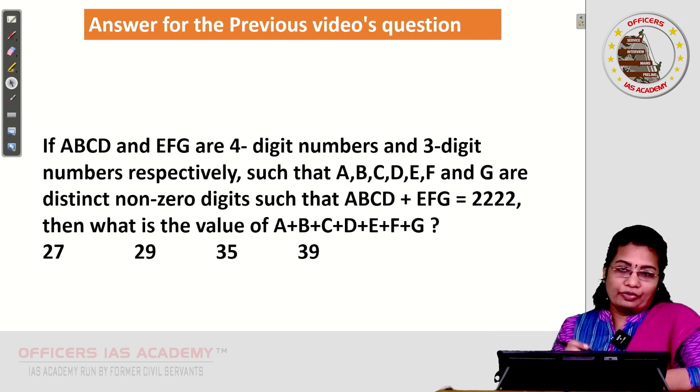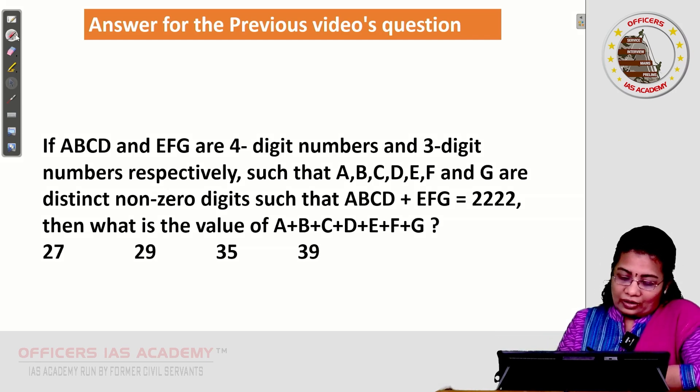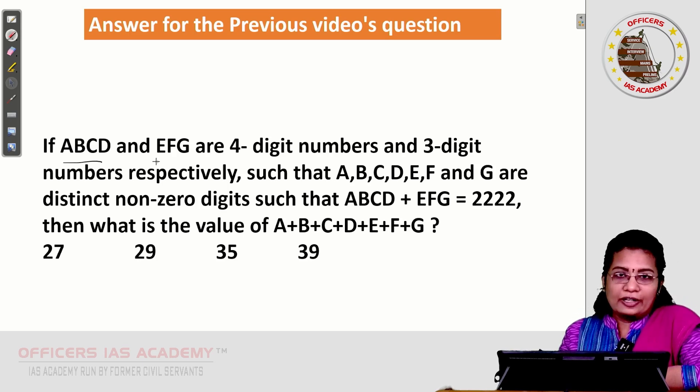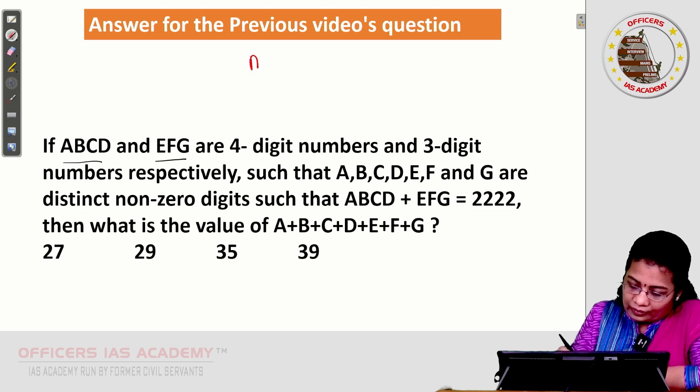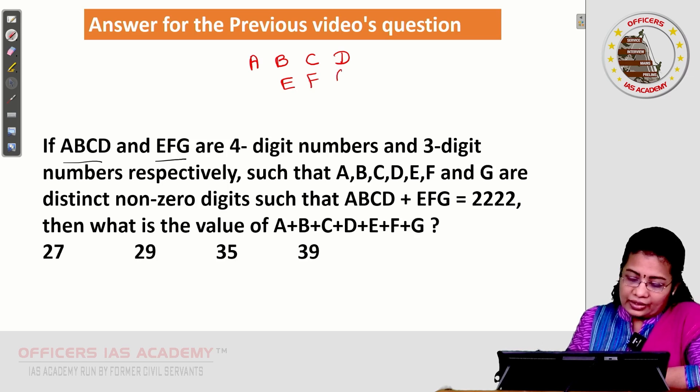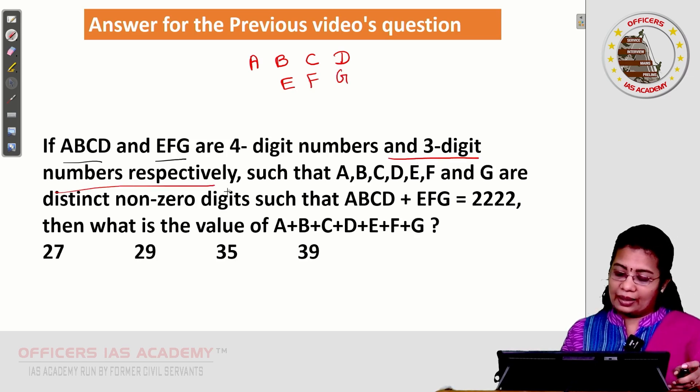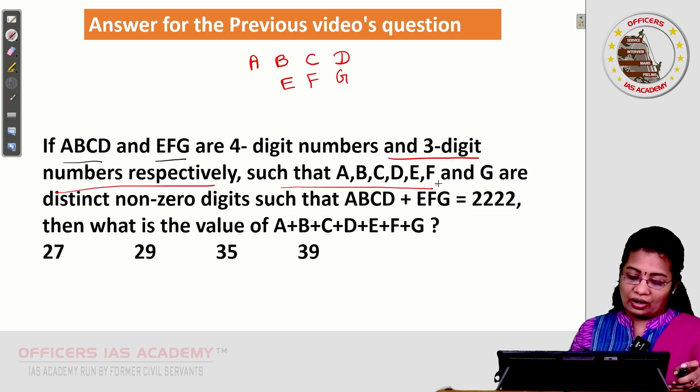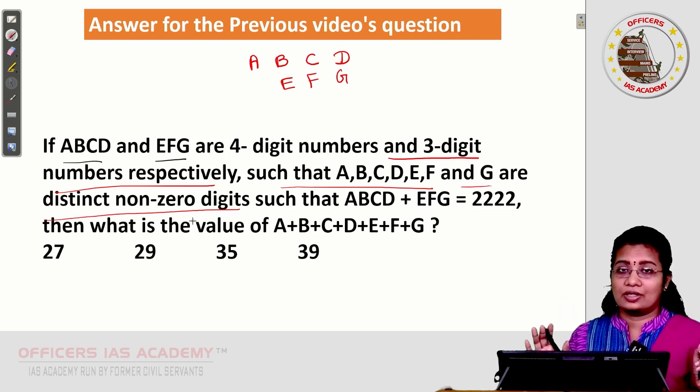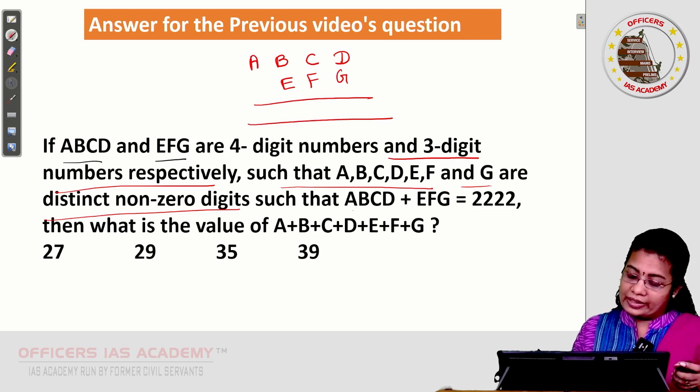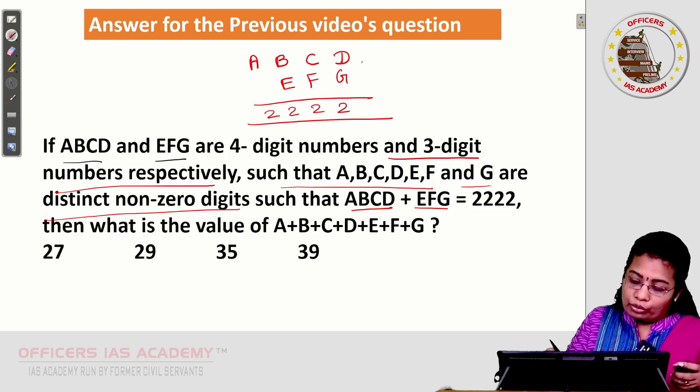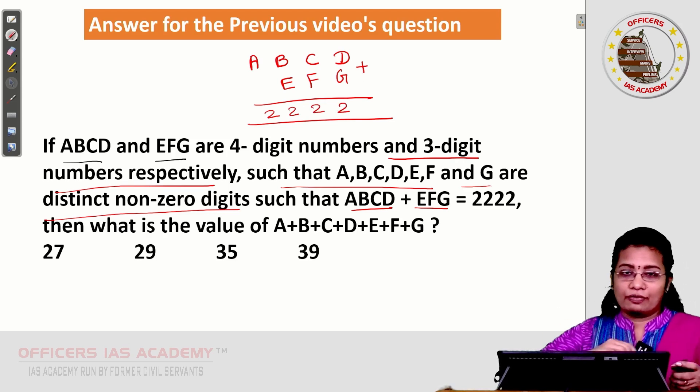Answer for the previous video's question. Given is A, B, C, D, E, F, G are 4 digit numbers and 3 digit numbers respectively such that A, B, C, D, E, F and G are distinct non-zero digits. Everything is a single digit number. If you add both ABCD plus EFG, you get 2,222 as the result. This is the pattern of decoding the question.